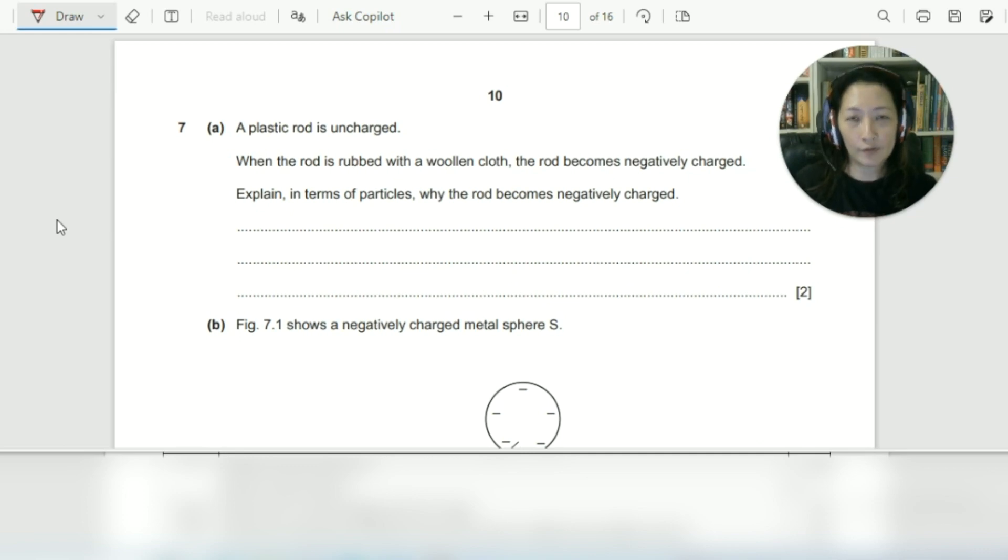So what has moved? Now remember that when it comes to charges, only negative charges can move. Because the rod has become negatively charged, that means the electrons, which are the negative charges, have moved to the rod. Where have they moved from? They moved from the woolen cloth to the rod. That's where the rod gains the additional electrons. So that's what we're going to write.